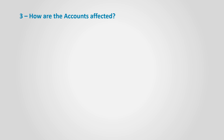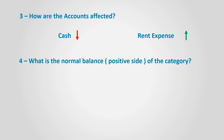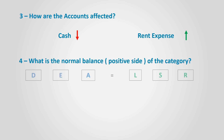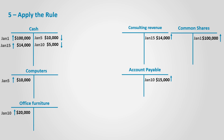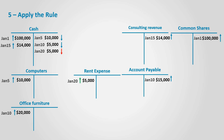How are the accounts affected? Cash decreased since the business paid cash, and rent expense increased because the business now has rent expense. What is the normal balance? Both assets and expense categories have a normal debit balance. Let's apply the rule: cash falls in the assets category whose normal balance is debit and it decreases, so $5,000 is recorded in the credit side. Rent expense falls in the expenses category and it increased, so it is recorded in the debit side. Notice the overall effect: assets decreased by $5,000 in the form of cash, and expenses increased by $5,000 in the form of rent expense, a net effect of zero on the left-hand side. The right-hand side is not affected, so both sides balance.